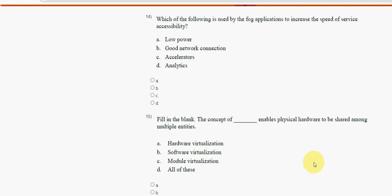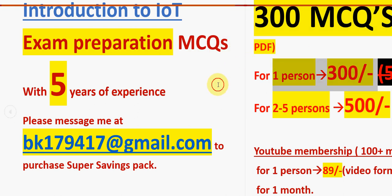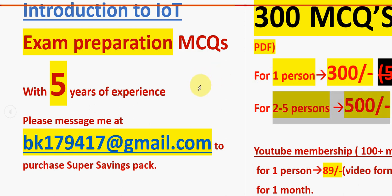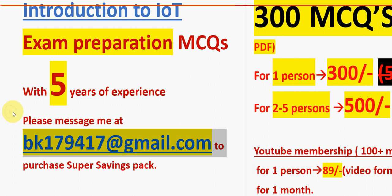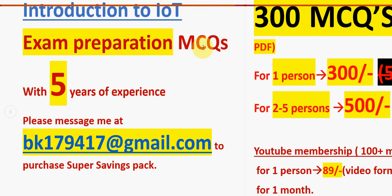Before getting into the fourteenth question, a reminder: we have prepared exam preparation MCQs for the Introduction to IoT course using 5 years of NPTEL experience. You get 300 MCQs in a Google Drive PDF link — 300 rupees for one person, 500 rupees for two to five persons combined. Last time 75 to 80 percent of questions came from our pack. There is also a YouTube membership for 89 rupees with 100 plus MCQs in video format, but I recommend the 300 MCQs PDF pack for broader syllabus coverage.